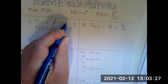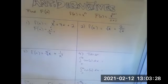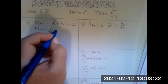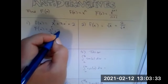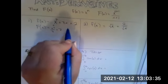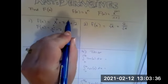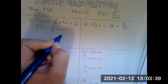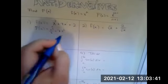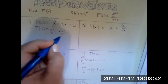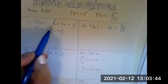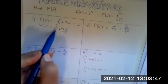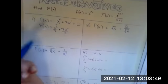Then we deal with the seven X. Seven X is seven X to the power of one. The seven stays because of the constant multiple rule. We add one, so we get X squared, and then we divide by that new exponent. Our power should match what we're dividing by when we take the antiderivative — same here.